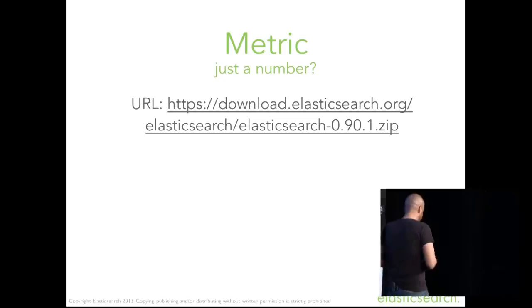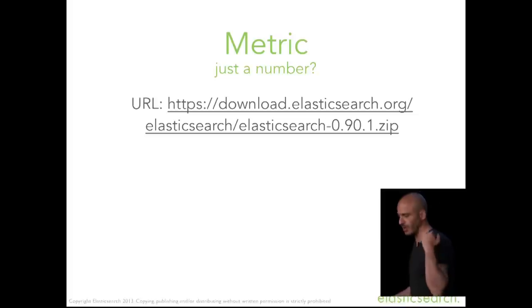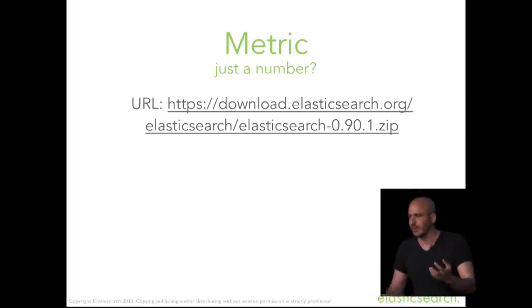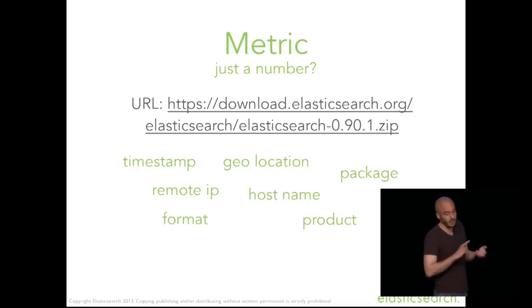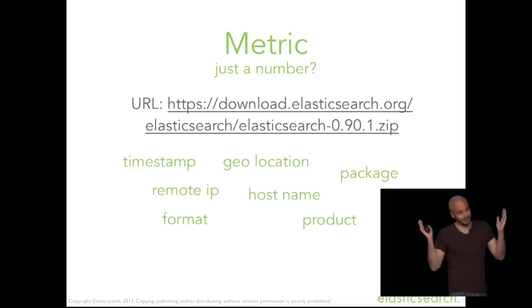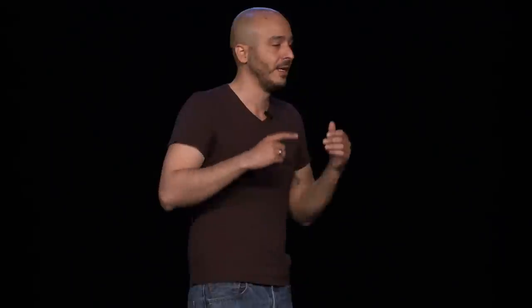In Elasticsearch we like to eat our own dog food. Whenever you download Elasticsearch, we take that download event, store it in Elasticsearch, and use it for analytics around who downloads what. This is an example of a download URL — but it doesn't end there. It matters when you downloaded it, where from (France is dominating, which I'm happy about), which IP, which geolocation, which product, which format.